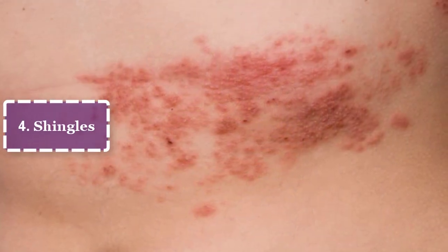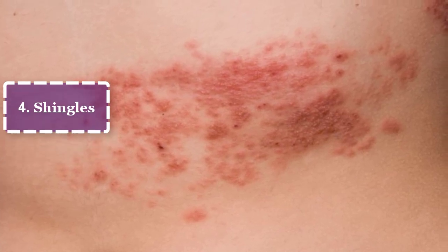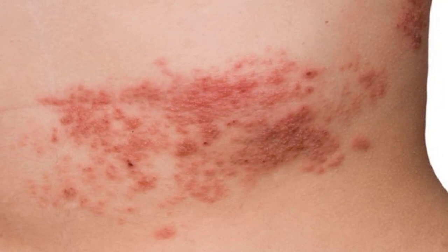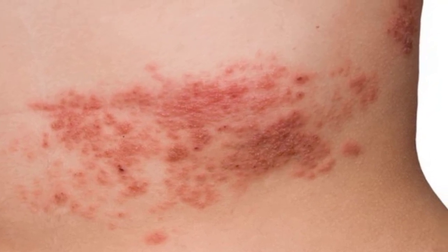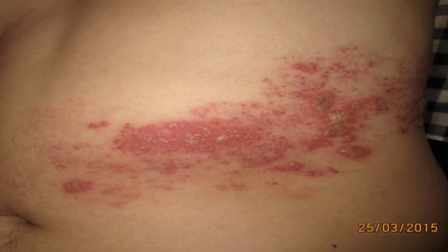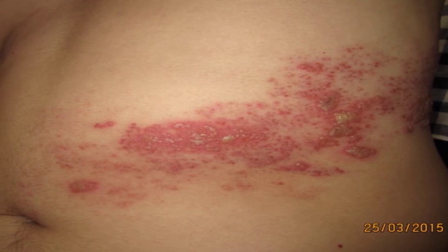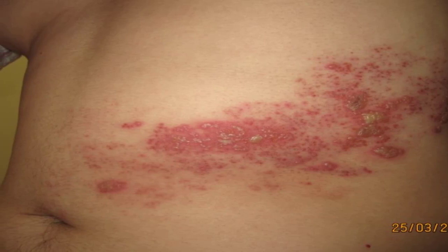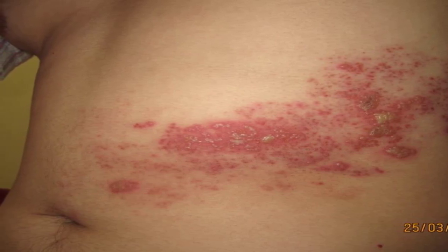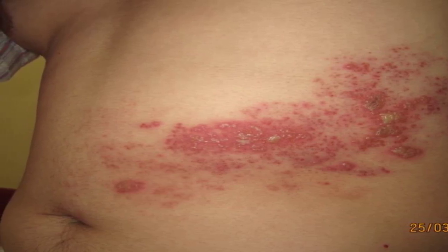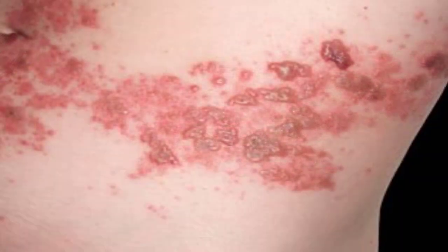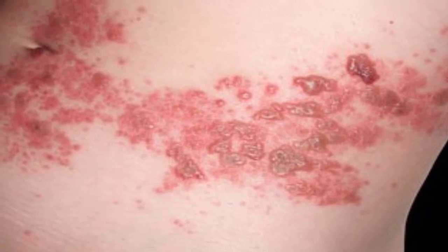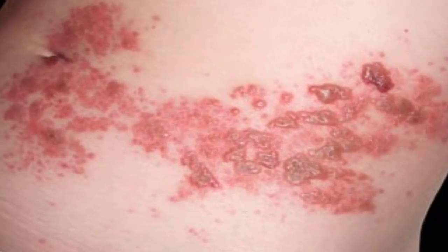4. Shingles — Ever had the chicken pox? If so, the varicella zoster virus sits quietly in your body and can show up again later as shingles. Your risk goes up as you age, usually after age 50. The shingles infection can cause a painful rash that looks like a stripe of blisters wrapping around one side of your body. Sometimes the rash shows up on the neck or face. Some people have pain but no rash.